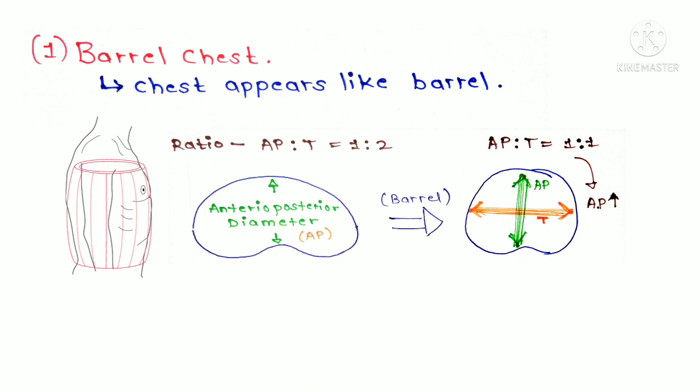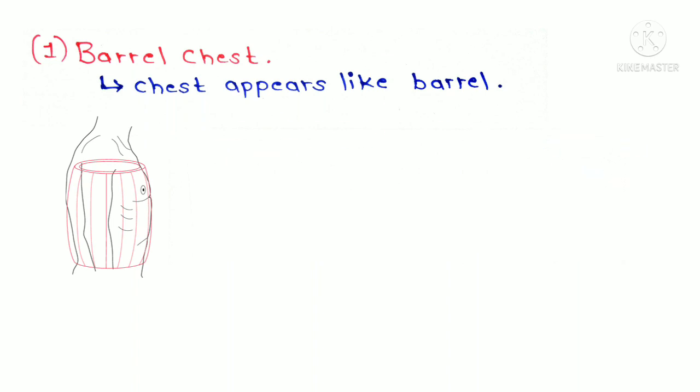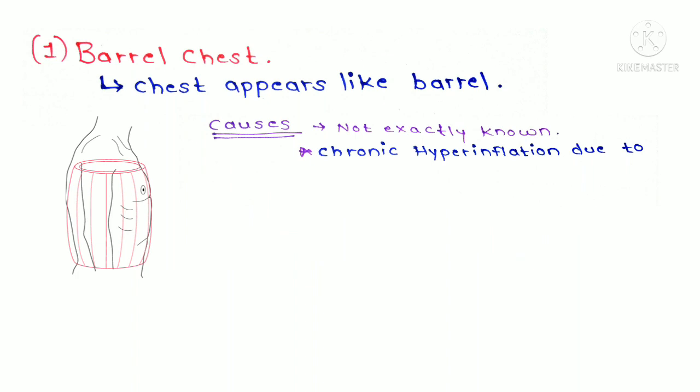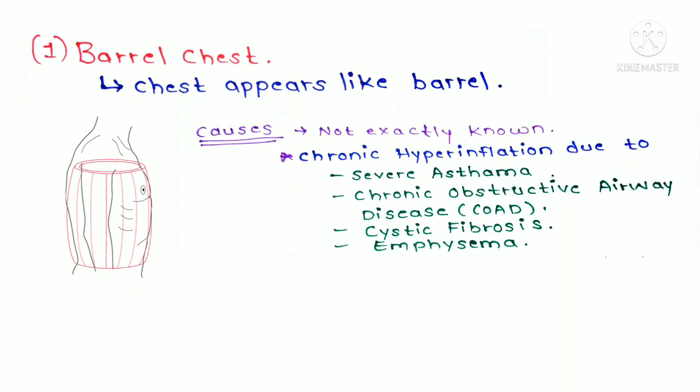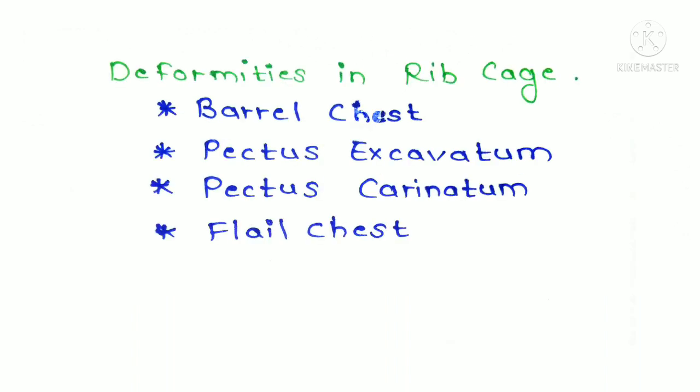The cause of barrel chest is unknown, but it is linked with chronic hyper-inflation caused due to severe asthma, chronic obstructive airways disease, cystic fibrosis, and emphysema.